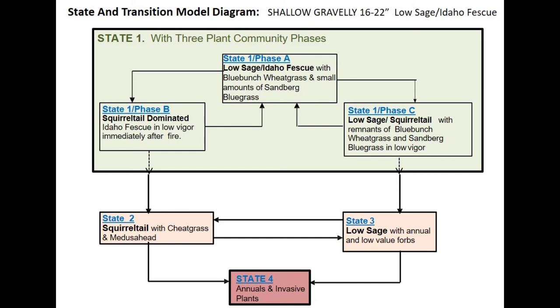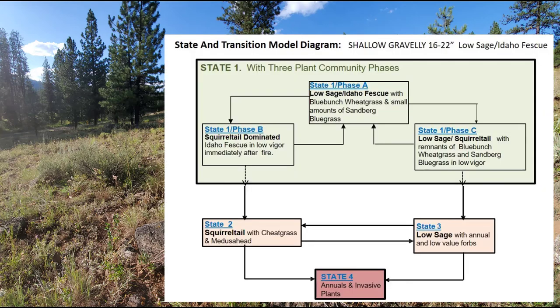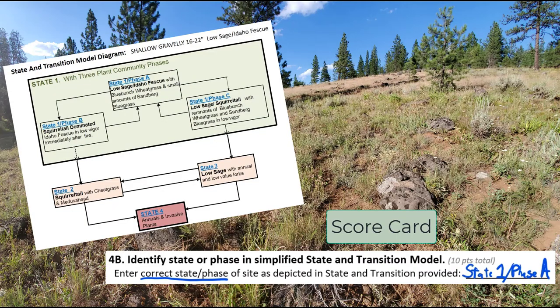I'm going to give you one more look, and then I'll bring you back to the state and transition model. What you write on your scorecard is the state and the phase that you believe that site is in. I think that one is in State 1 Phase A, so that's what I'm going to write on my card.